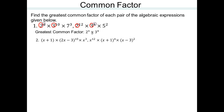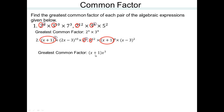Try that one on your own. Look for common factors. x plus 1 appears in both expressions — with power 4 and power 1, so we keep power of 1. When there's no written power, it's power of 1. 2x minus 3 is present in one but not the other, so we ignore it. x to the 3rd and x to the 12th — we keep x to the 3rd, the smaller power. So the greatest common factor is x plus 1 times x to the 3rd.